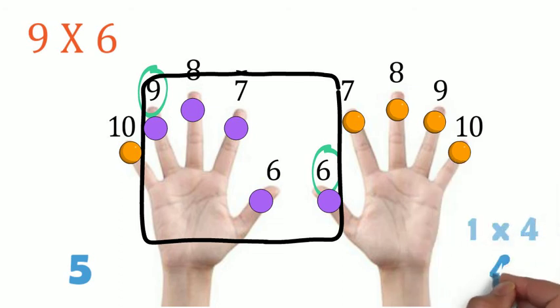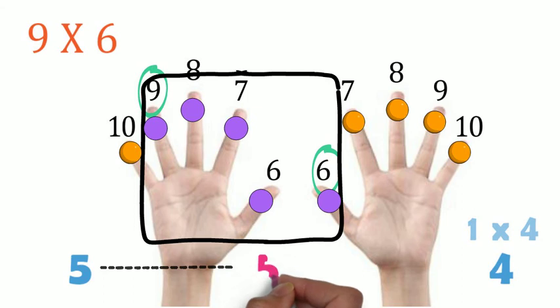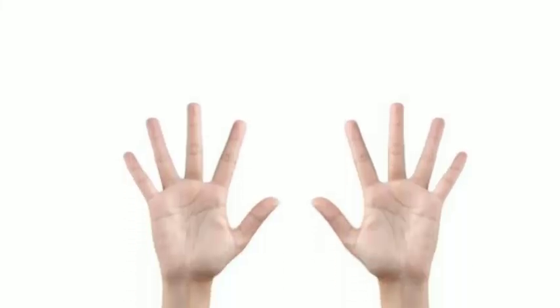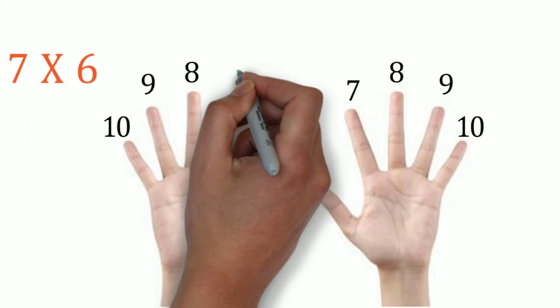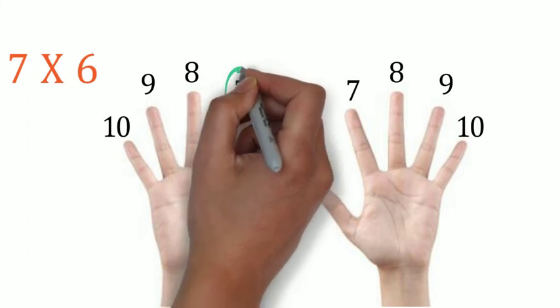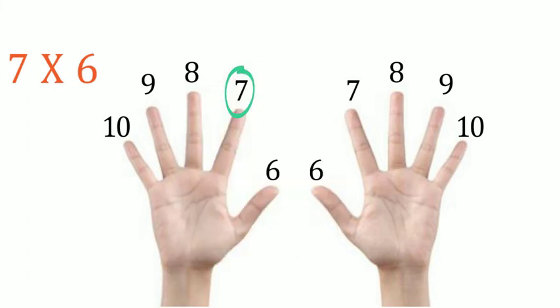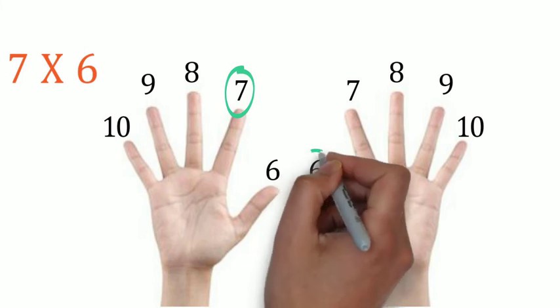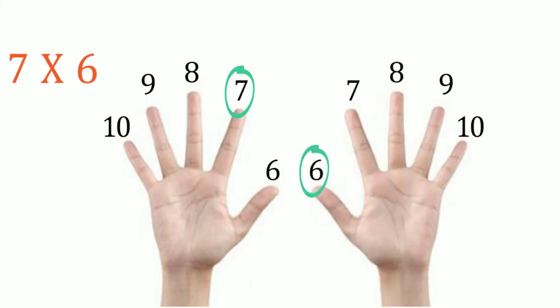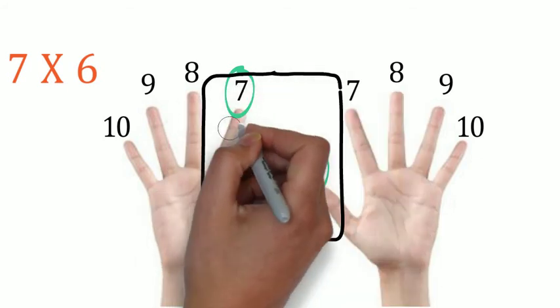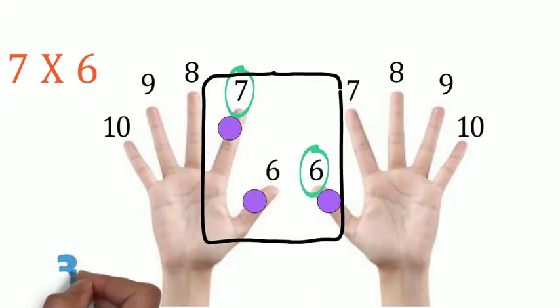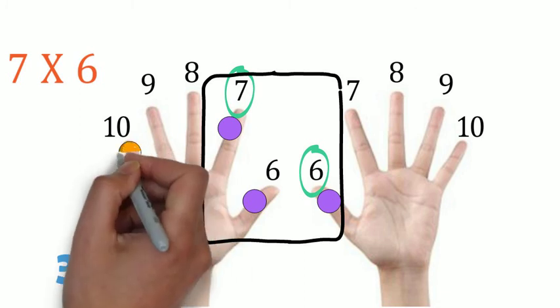Okay, now let's try something a bit harder, one that involves carrying. Let's try seven times six. On the left hand we find finger number seven, bring to the center all fingers seven and below. On the right, find finger number six and bring to the center all fingers number six and below. Now let's count all the fingers in the center. There are three.